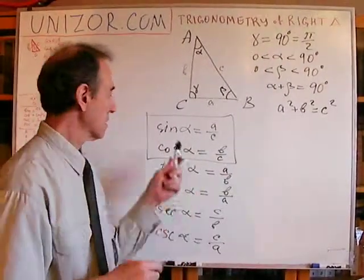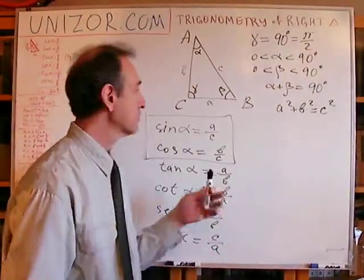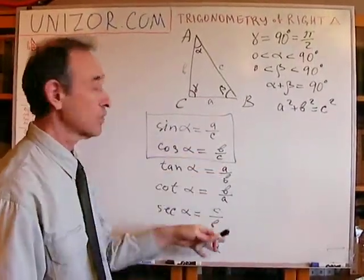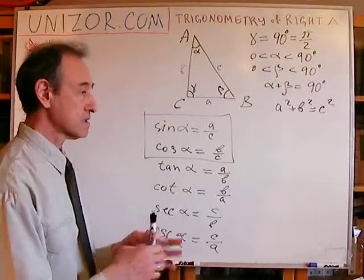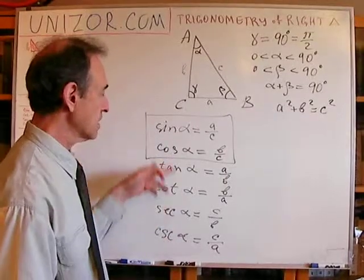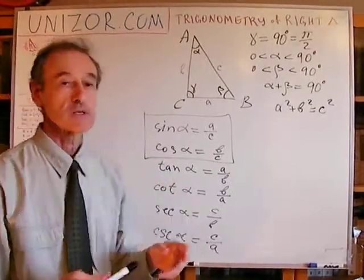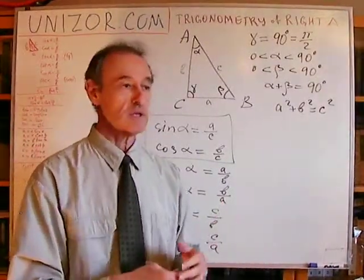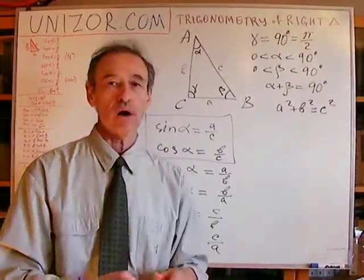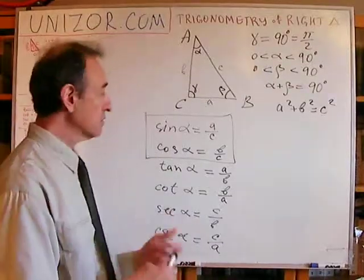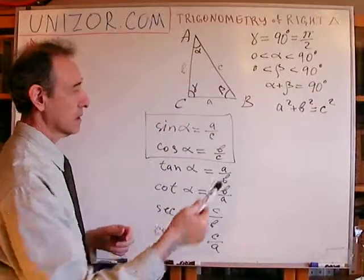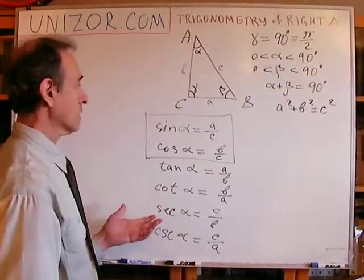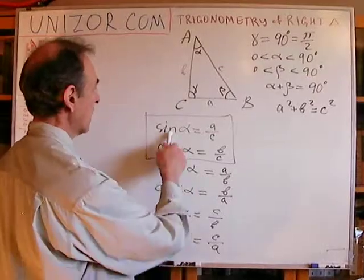These functions are functions of angle only, which means if you take any other right triangle with the same angles alpha and beta, the ratios will be exactly the same. This means we can tabulate the values of sine and cosine for any angle, and use these pre-calculated values — which are already built into our calculators and computers. We can use them to resolve right triangles: if you have one side, here is how to find another. It directly follows from these formulas.